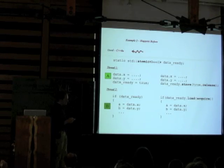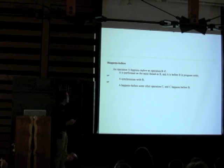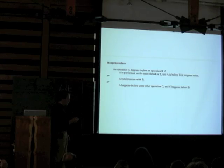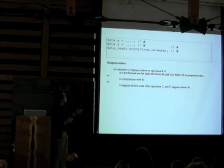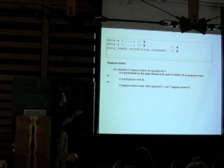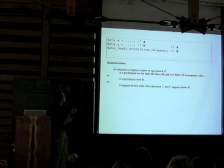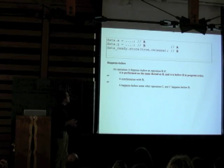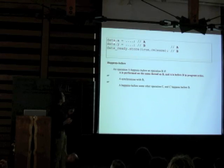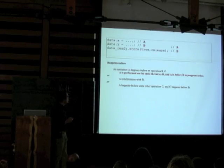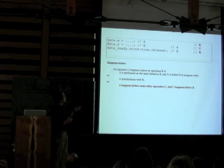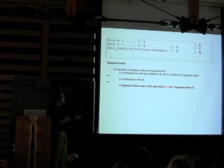In standard terms, the key concept is 'happens-before.' A happens before B if they're on the same thread and in program order — x happens before y because you wrote them that way. So y happens before data_ready in program order. The CPU may not do them in that order, but to the standard it doesn't matter — in the abstract machine we decide this happens before that. Then there's transitivity: if this line happens before that line and that line happens before the third line, then the first happens before the third.